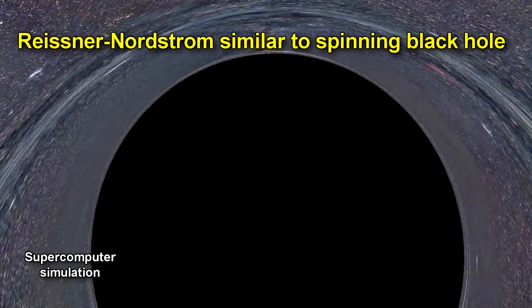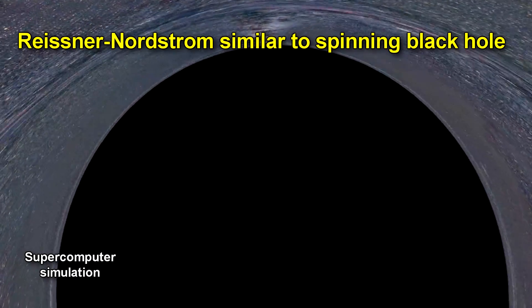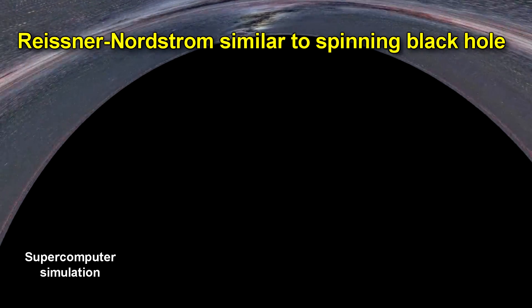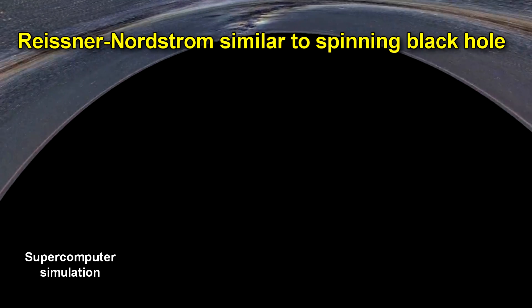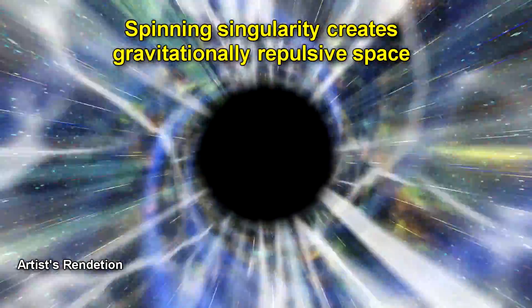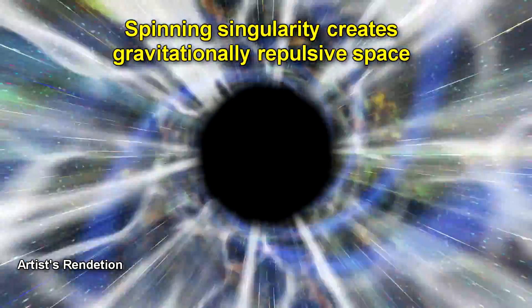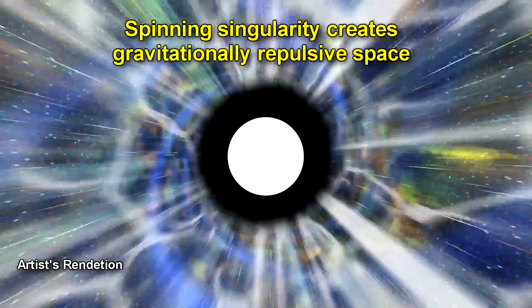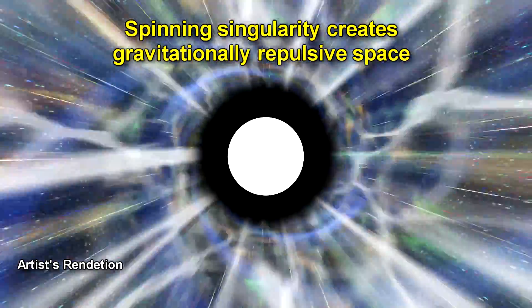In the first case, if this black hole is a charged black hole called a Reisner-Nordstrom black hole, its math would be similar to a spinning black hole as most black holes are believed to be. In this case, the singularity would take the shape of a one dimensional ring, and this spinning singularity creates such a high centrifugal force that space near it becomes gravitationally repulsive instead of attractive. And this spinning singularity creates an inner horizon that is a wormhole or an Einstein-Rosen bridge.